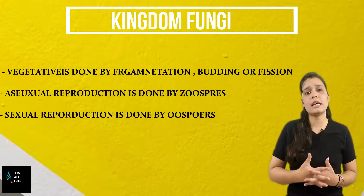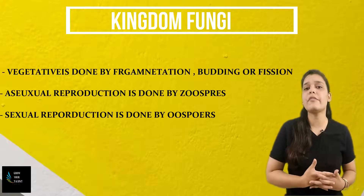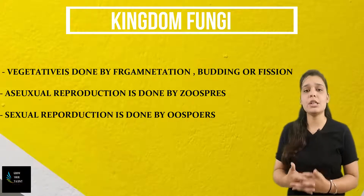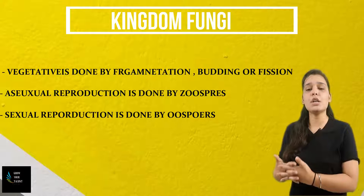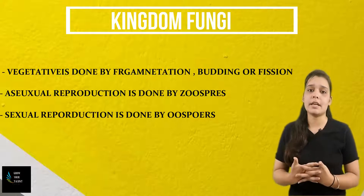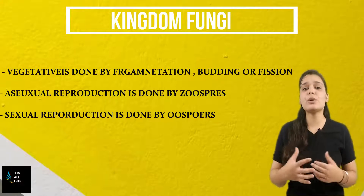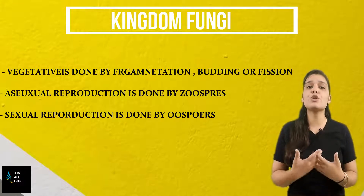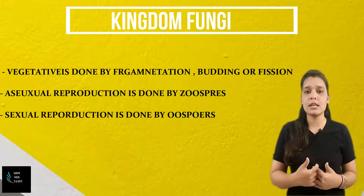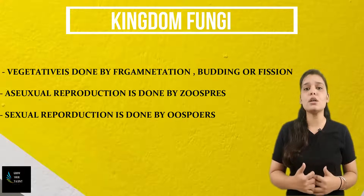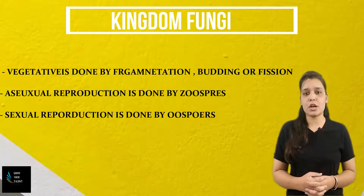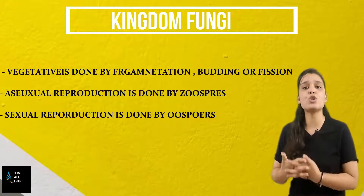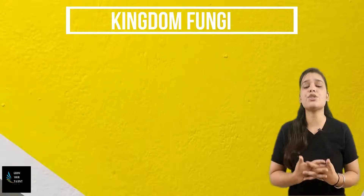The reproduction process in fungi is by fragmentation, fission, or budding. Asexual reproduction is done by spore cells known as zoospores, and sexual reproduction can be done by oospores.